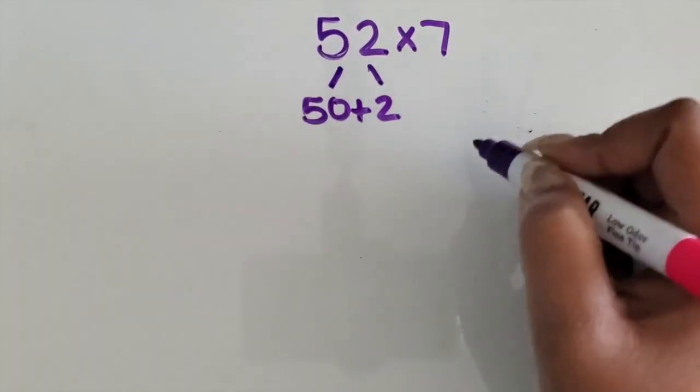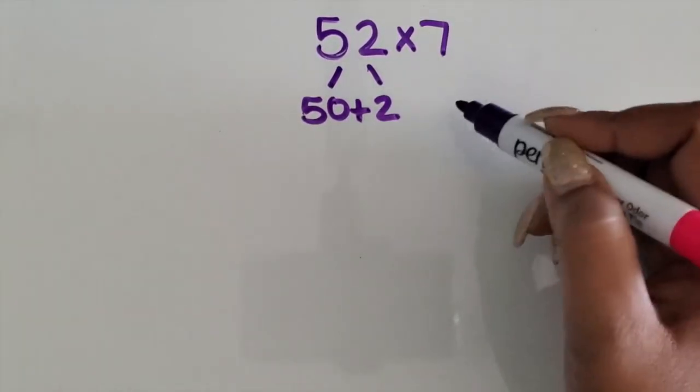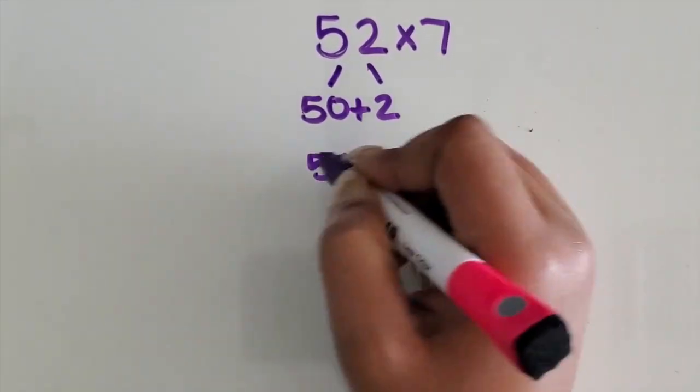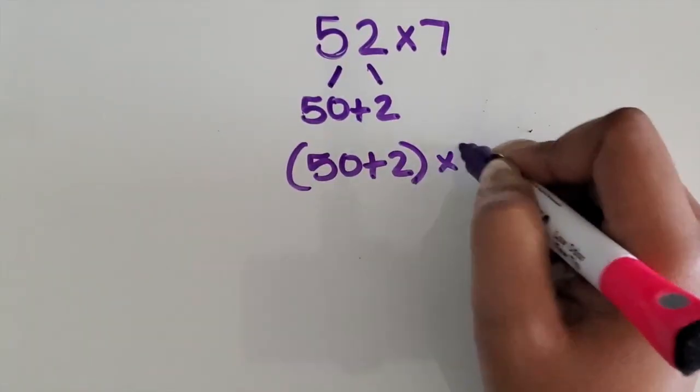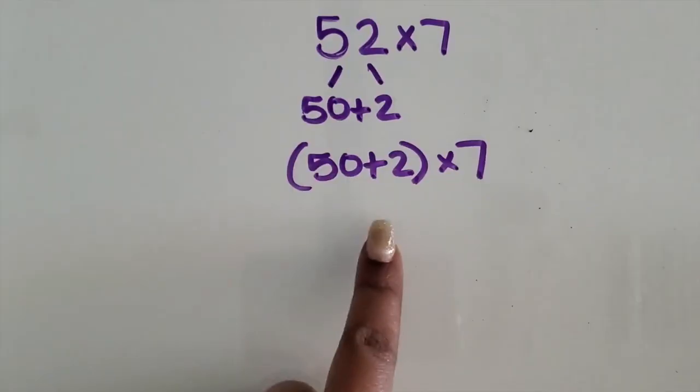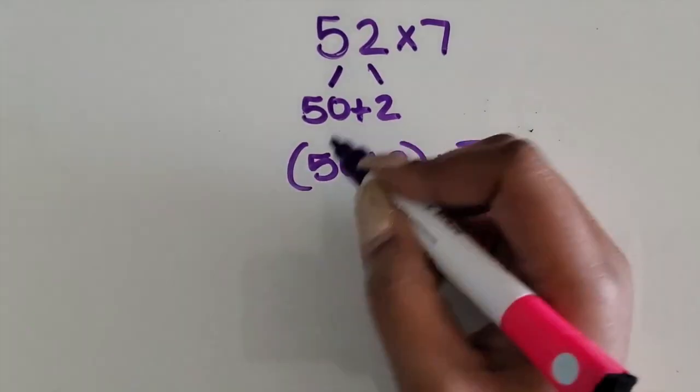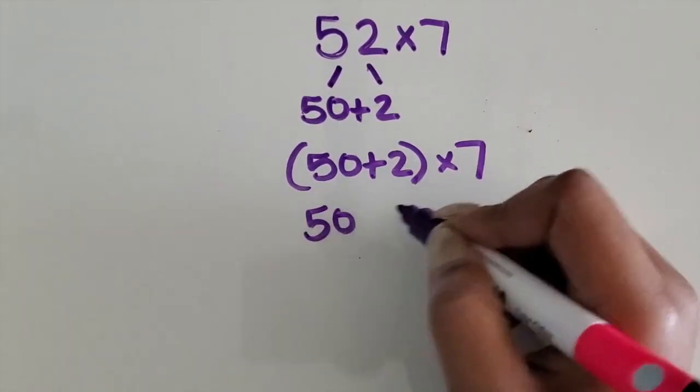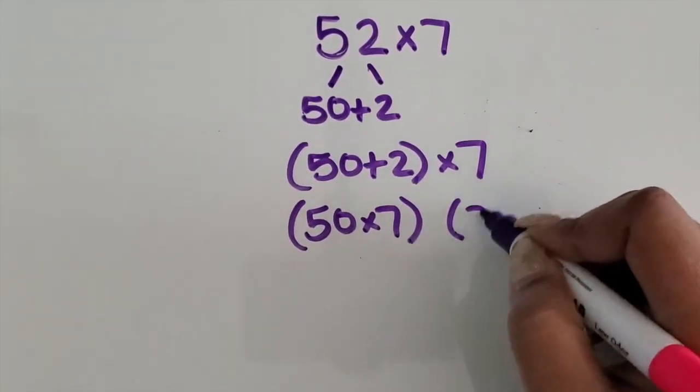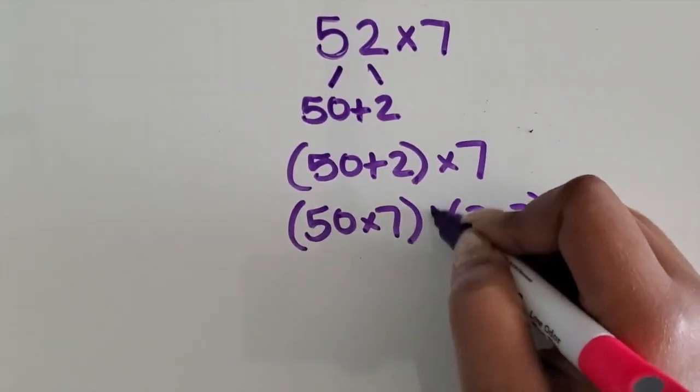I'm going to keep the 7 as my second factor, so I know I'm multiplying 50 plus 2 times 7. I want students to understand that the total value did not change. So they should take 50 and multiply it times 7, and then 2 and multiply it times 7, and then they're going to add those two values together.